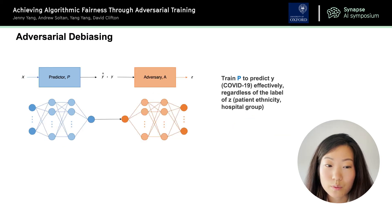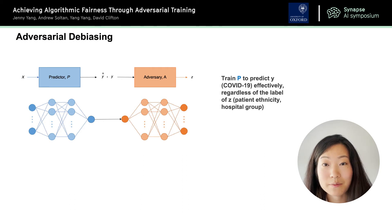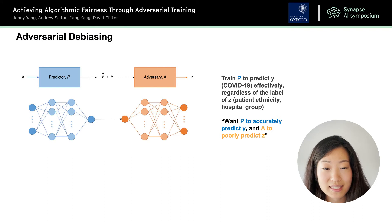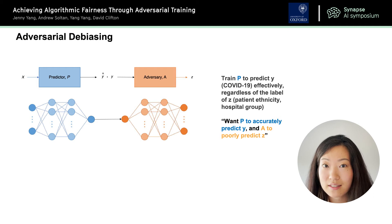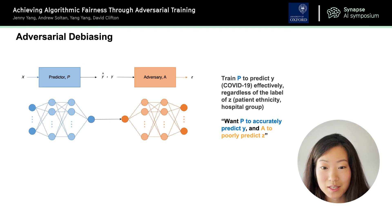In general, our goal is to train P, our predictor, to predict COVID-19 effectively regardless of the label of Z, where Z represents either patient ethnicity or hospital group. In simpler terms, we want P to accurately predict Y and A to poorly predict Z. That way, we will have shown that we can train a strong predictor that isn't biased or correlated to the variable Z, which is in our case patient ethnicity or hospital group.